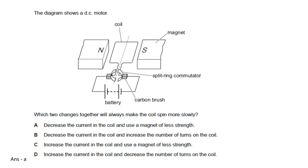The next question shows a DC motor. Which two changes together will always make the coil spin more slowly? We need to find ways to reduce the speed of the coil. Looking at all four options, the correct answer is option A: decrease the current in the coil, and use a magnet of less strength. Applying both of these will definitely reduce the speed of the coil.